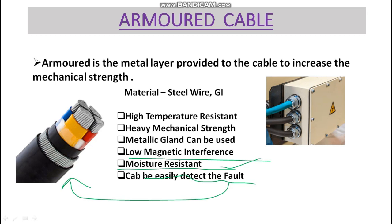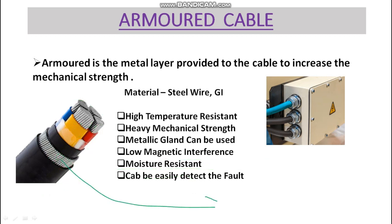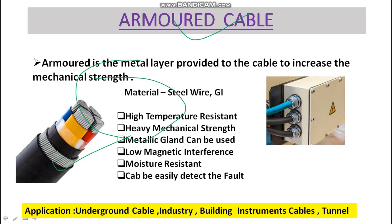Additional advantages include moisture resistance. Armored cable also allows easy fault detection — if a fault occurs, you can perform a continuity test with a multimeter between the armor and individual cores; continuity indicates cable damage, making faults easy to locate. Furthermore, the armor can also be used for earthing purposes.